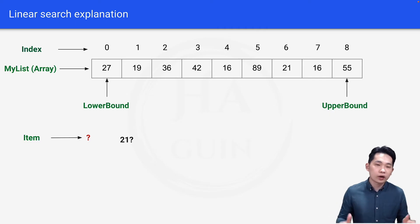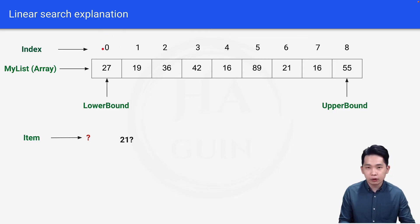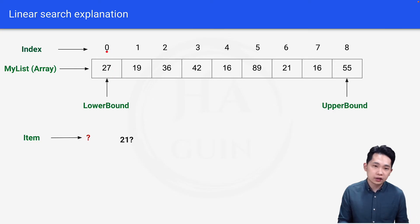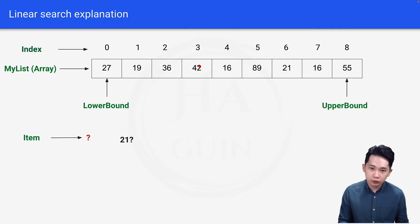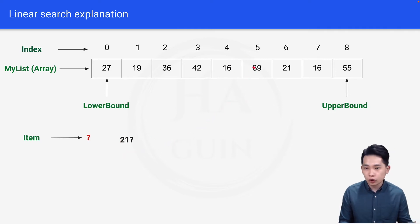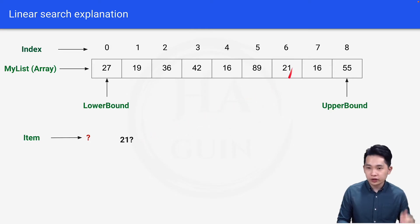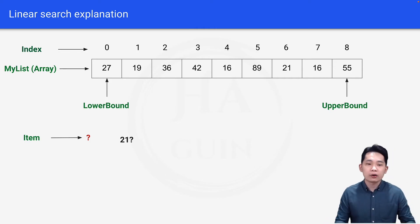How do you search for 21 in this array? We always start from index 0. Is 21 equal to 27? No. The index increases by 1. Is 21 equal to 19? No. We continue checking 36, 42, 16, 89 — all not equal to 21. Once we reach index 6, is 21 equal to 21? Yes! We have found 21 in the array, so we exit the iteration and output 'item found'.